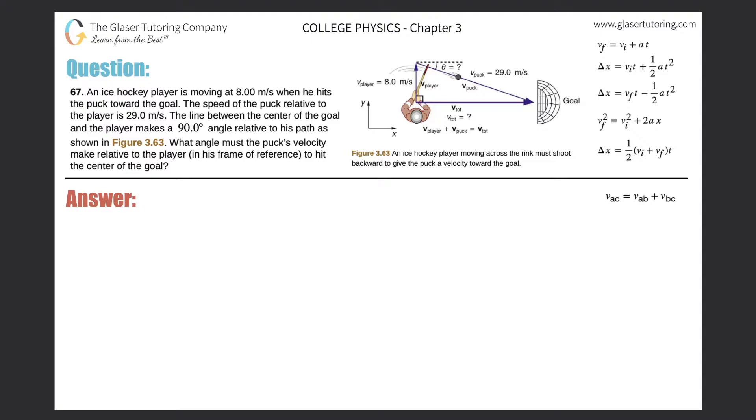Number 67. An ice hockey player is moving at 8 meters per second when he hits the puck toward the goal. The speed of the puck relative to the player is 29 meters per second.